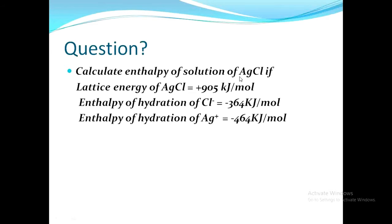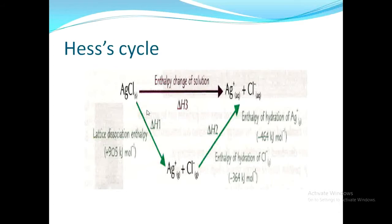For the calculation of the enthalpy of solution of silver chloride, first of all we have to draw the Hess's cycle. Here is the Hess's cycle drawn for silver chloride. You can see there are two types of arrows within the diagram: one is the black arrow representing the direct path, while the green arrows are representing the indirect path.